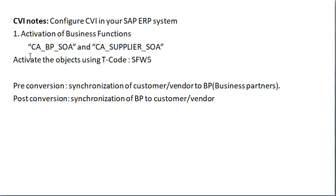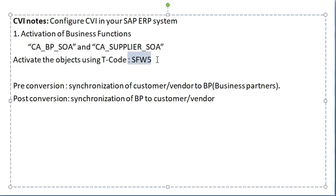Next, we implement the CBI nodes using T-code SFW5. By applying the CBI nodes, we configure CVI — Customer Vendor Integration — in the SAP ERP system, and we activate the two required business functions. In the pre-conversion phase, we synchronize customers and vendors to business partners. After completing the conversion — that is, in the post-conversion phase — we synchronize business partners back to customer and vendor.